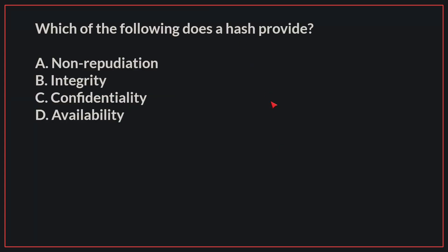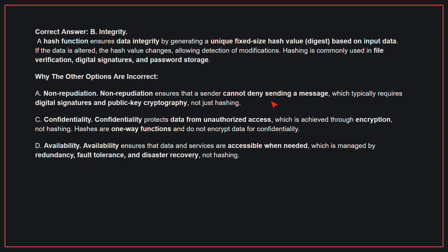Which of the following does a hash provide? The correct answer is B, Integrity. A hash function ensures data integrity by generating a unique fixed-size hash value based on input data. If the data is altered, the hash value changes, allowing detection of modifications. Hashing is commonly used in file verification, digital signatures, and password storage.